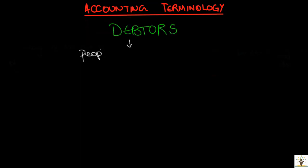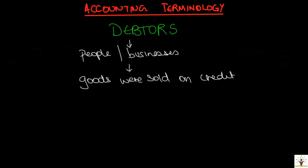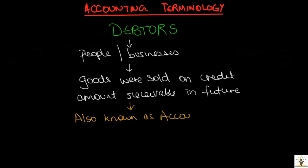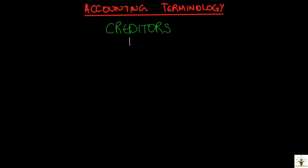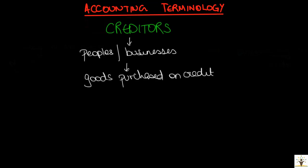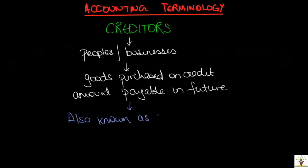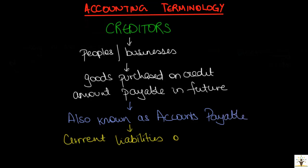In case of credit sales, it was agreed that the customer will pay the business on a later date. There is a specific term to describe these customers — they are called debtors, also known as accounts receivable. Since they represent an amount receivable by the business in future, they are the current assets of the business. When goods were purchased on credit, the suppliers are known as the creditors of the business, or accounts payable. Since these represent an amount payable in future, they are the current liabilities of the business.